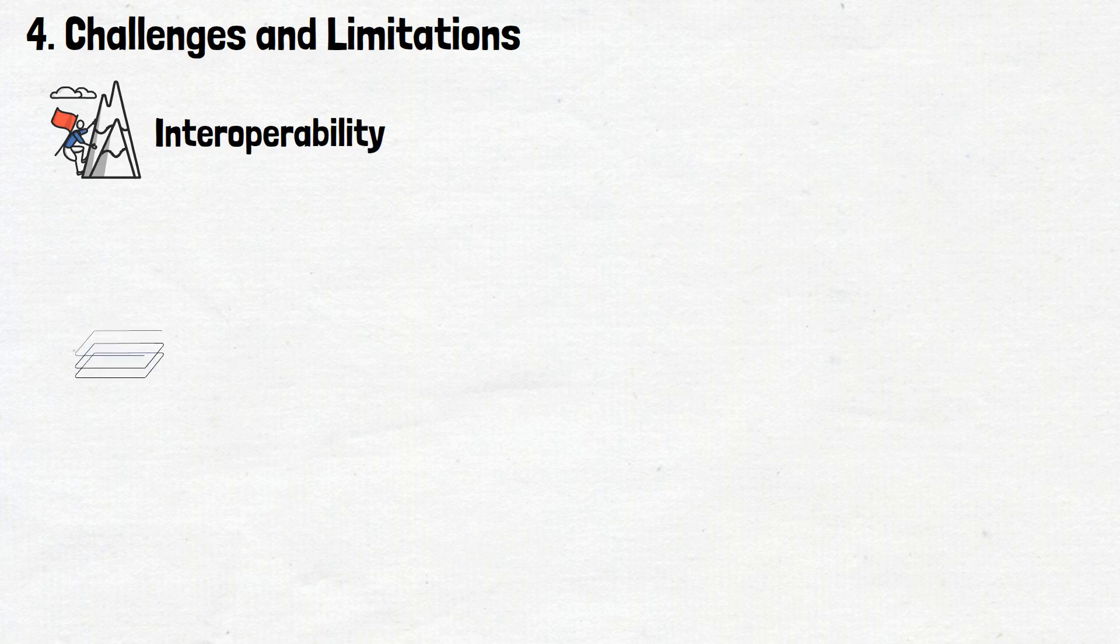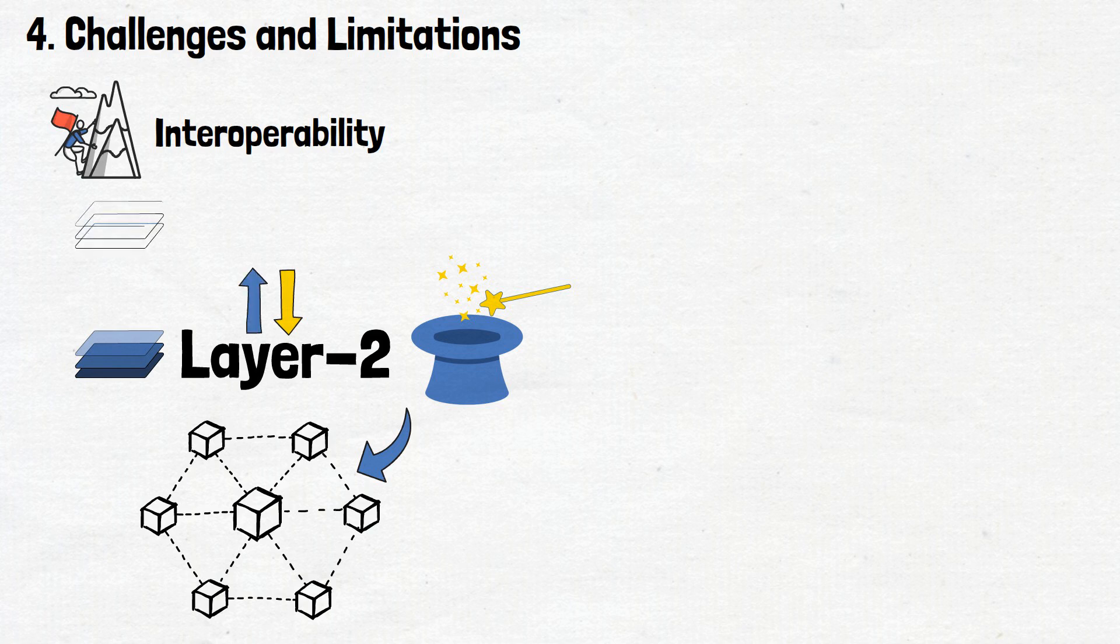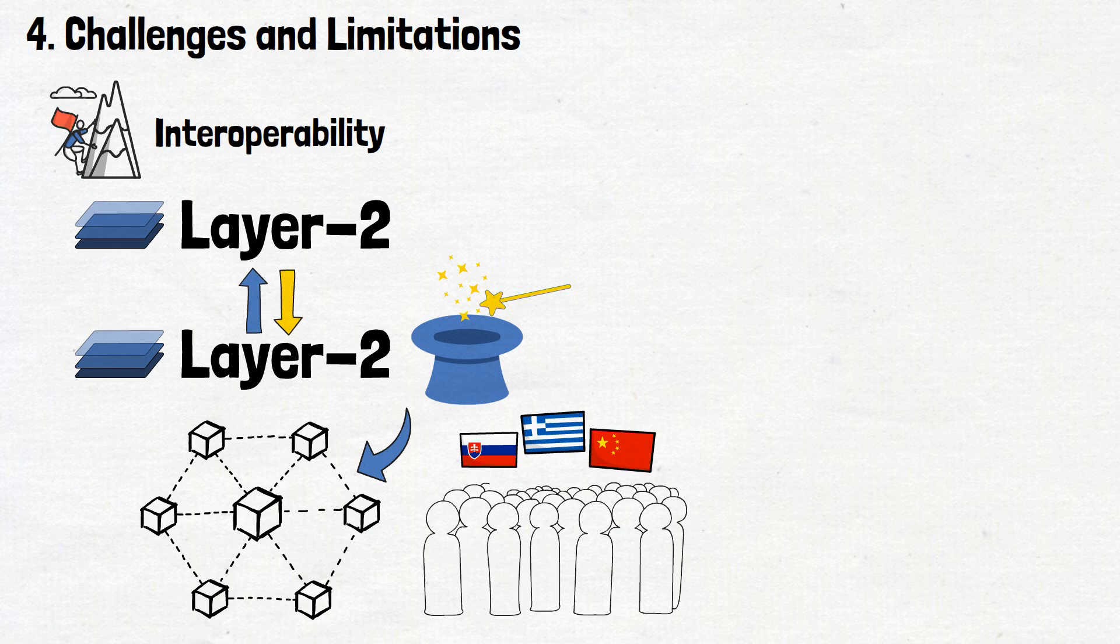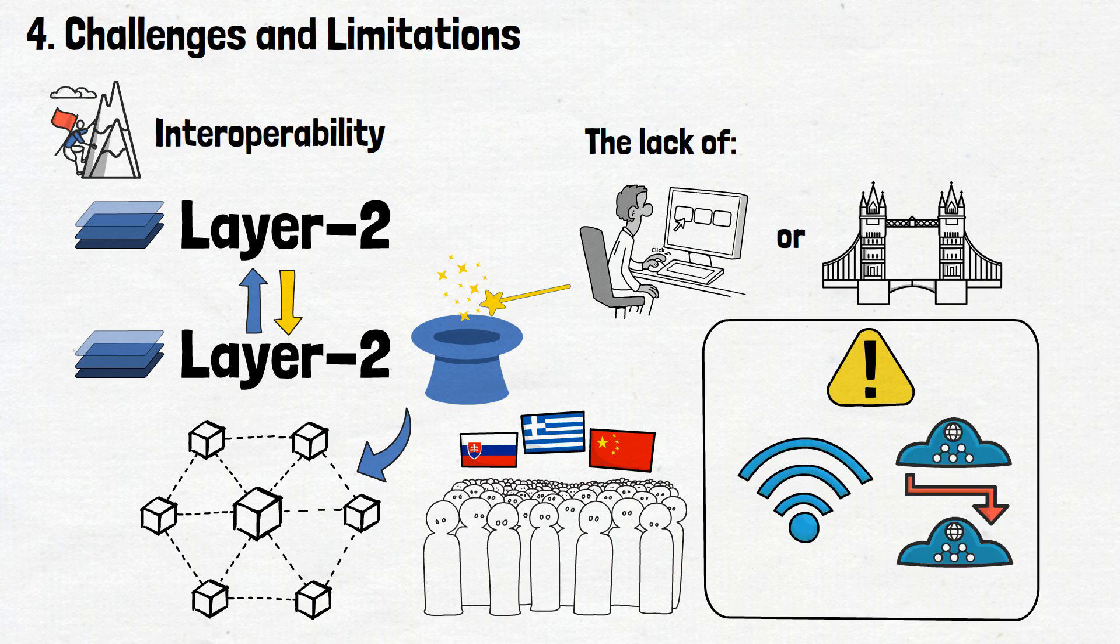One significant challenge is interoperability. While Layer 2 solutions work wonders within their own networks, ensuring seamless compatibility and communication between different Layer 2 protocols can be a bit like speaking multiple languages in a crowded room. The lack of standardized interfaces or bridges between these solutions can create complexities when trying to connect or transfer assets between them.